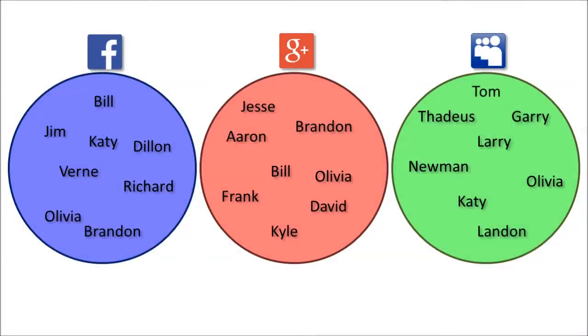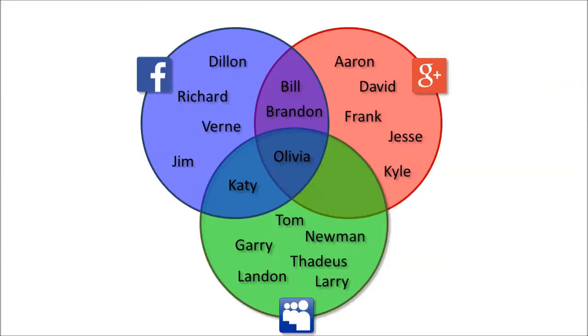A set differs from a list because in a set there is no order or ranking to the items. There is no number one friend in all of those sets — all of my friends are equally good friends. These three circles represent the sets of my Facebook, Google+, and MySpace friends. I do have some friends in common between the three social networks, so let me rearrange them to more easily show those shared relationships.